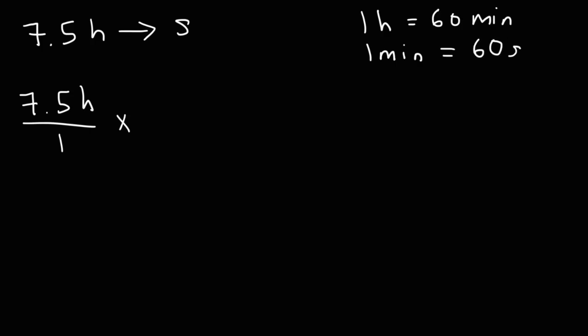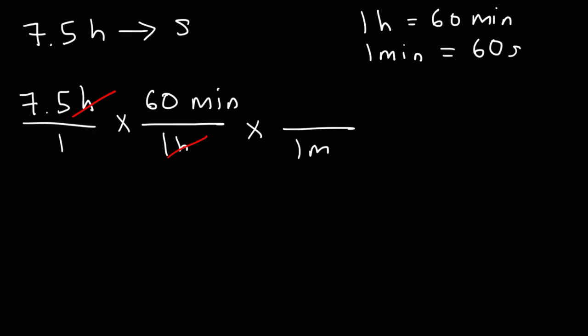Let's convert hours into minutes first. One hour corresponds to 60 minutes, so the unit hours cancel. Now let's convert minutes into seconds: one minute is equal to 60 seconds, so the unit minutes cancel. It's going to be 7.5 times 60 times 60, or 7.5 times 3,600. The answer is 27,000 seconds.